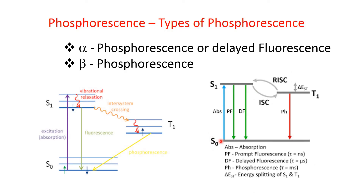Now, from S0, the electron may go to S1. Then from S1, if it immediately comes to the ground state S0, that is fluorescence — or prompt fluorescence. Otherwise, it may go to T1 by inter-system crossing and then come back to S0, the singlet ground state, by emitting energy in the form of radiation — which is phosphorescence, or beta phosphorescence.